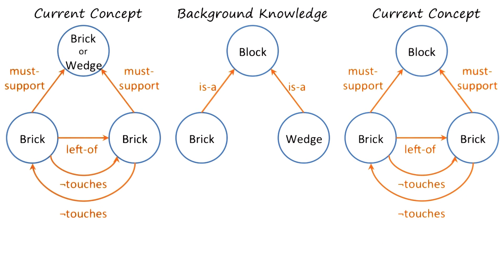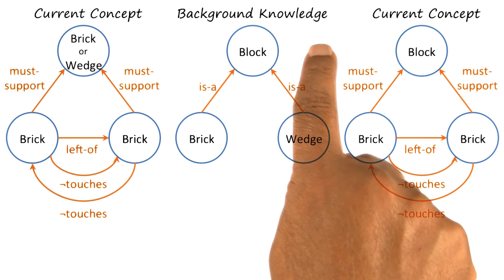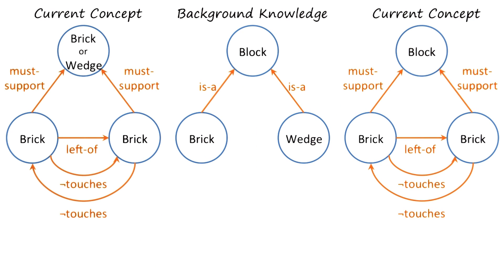But now we can ask two questions: what happens if the presence of a teacher who gives examples in a particular order, and the availability of background knowledge, tells the learner exactly how far to generalize? In general, deciding how much to generalize is a big problem. Learners tend to either overgeneralize, in which case they come to incorrect answers, or they tend to undergeneralize, in which case the answer might be correct but not very useful.